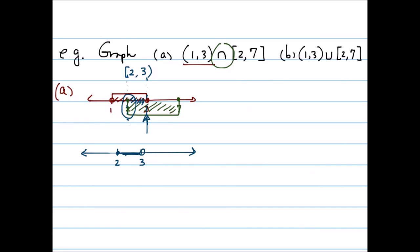I'll try to do similar things for part B next. The set from 1, 3 is shaded in here, and the set from 2, 7 is shaded in here. The union of the two sets is that basically you're looking for sets of numbers that are found in both sets, either or. So it's going to be basically everything from 1 to 7.